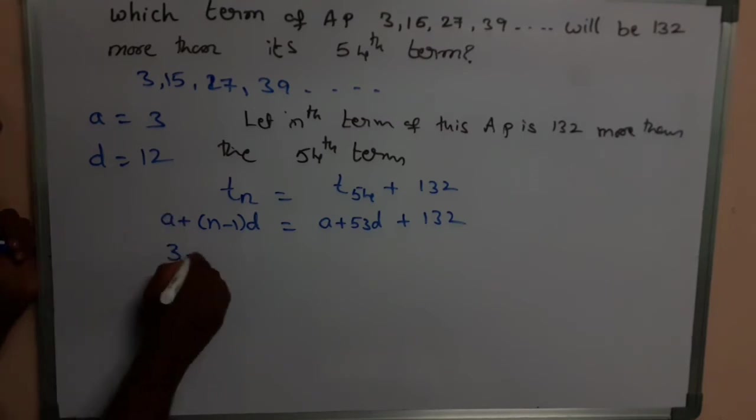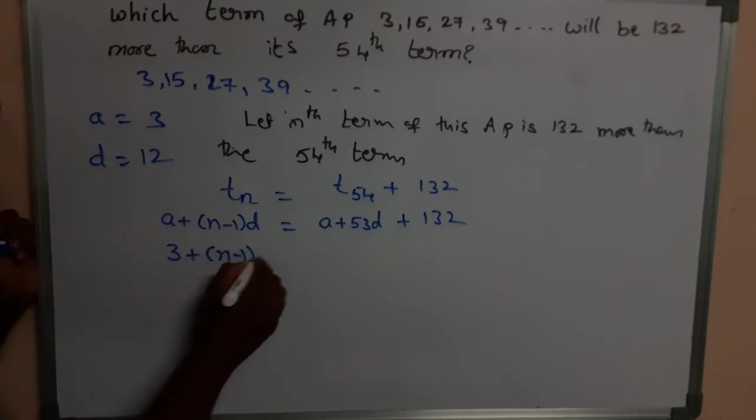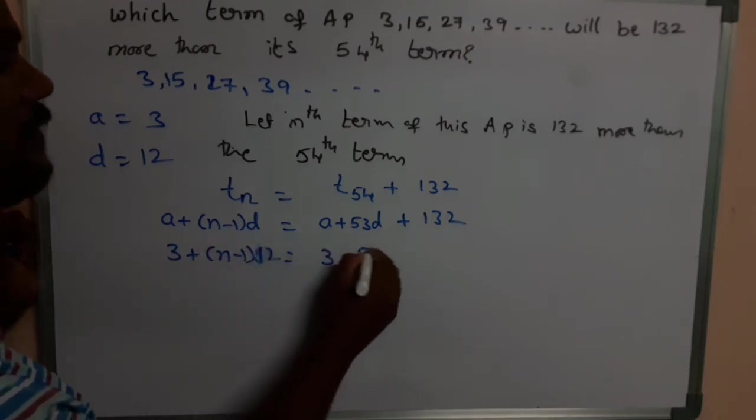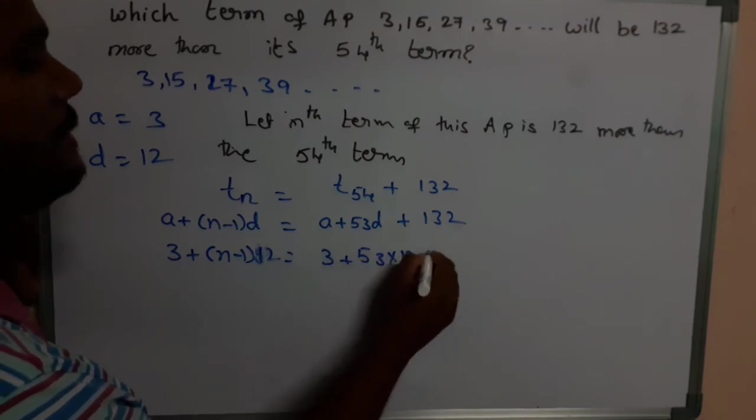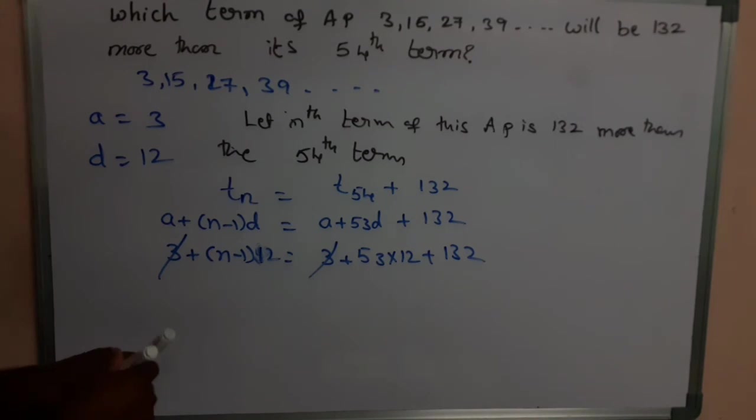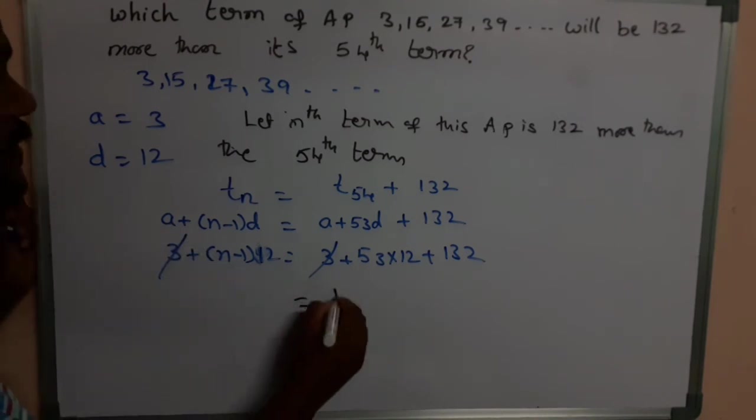3 plus (n minus 1) into d. d is 12, which is equal to 3 plus 53 into 12 plus 132. So 3 and 3 get cancelled, and on taking 12 as a common from the RHS, you get it as 53 plus 11.